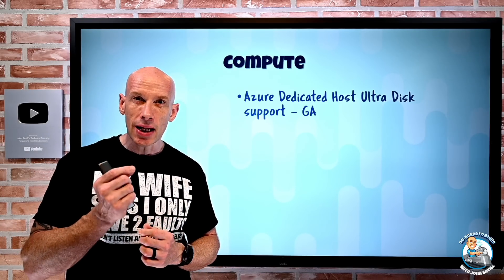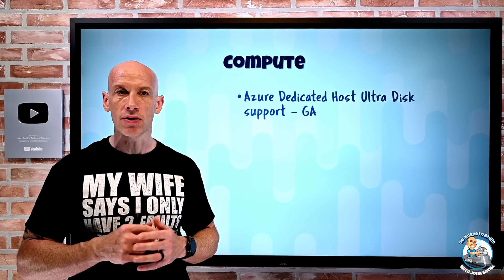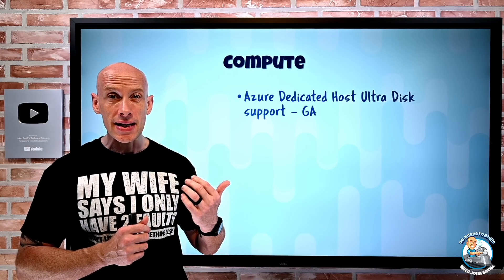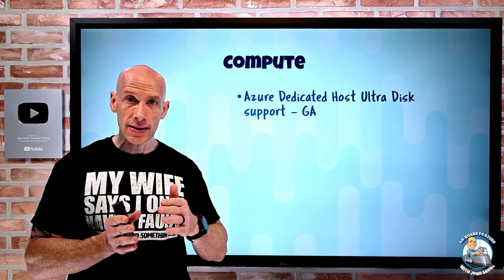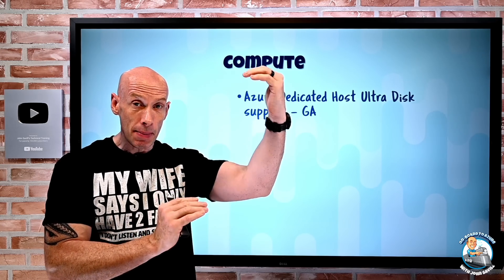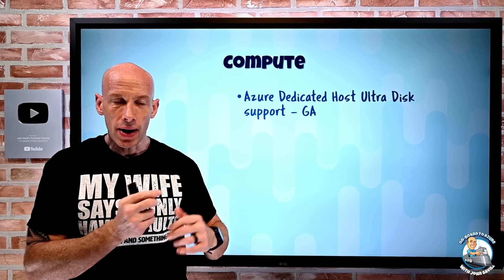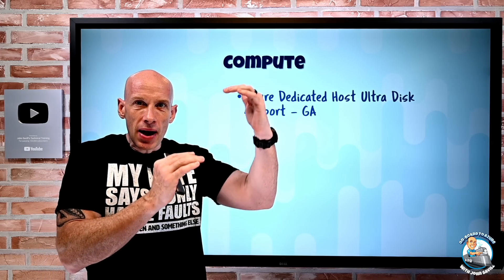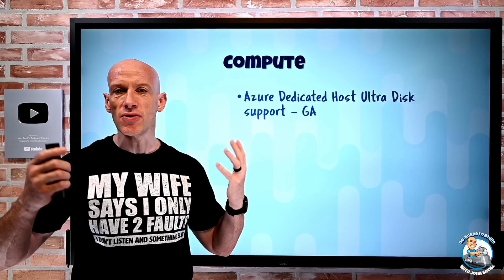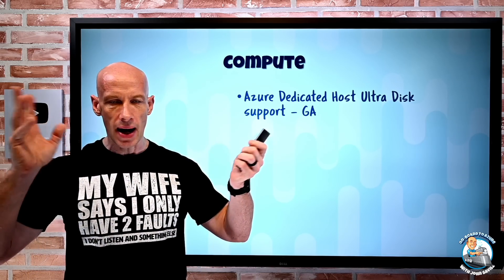UltraDisk is the lowest latency, most performant type of managed disk available. It also lets me independently set the capacity, IOPS, and throughput. That IOPS and throughput can actually be dynamically changed while it's in use, so I can only pay for the performance I need at different times — whatever seasonality I have, day, hour, whatever.